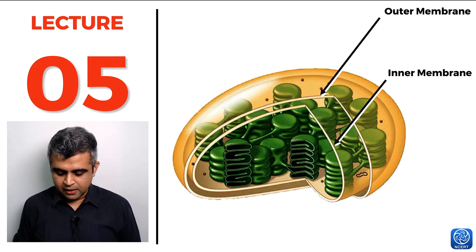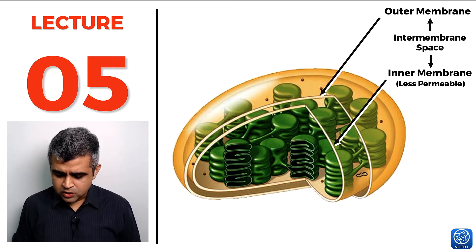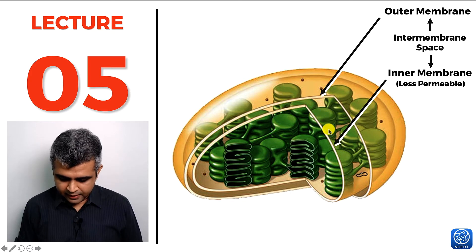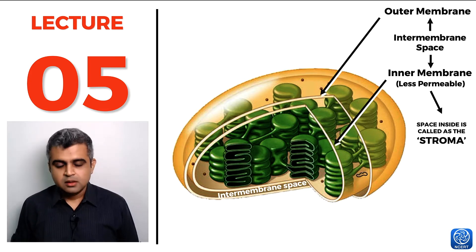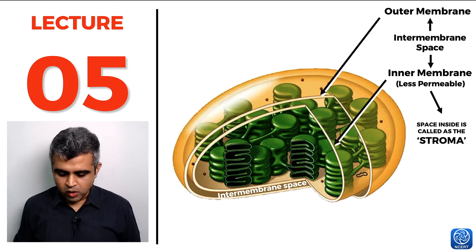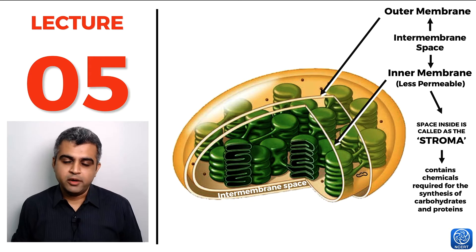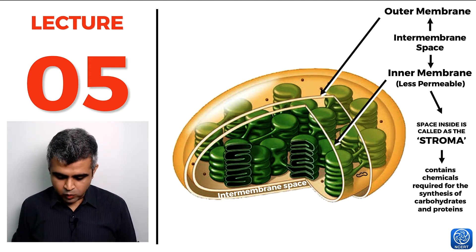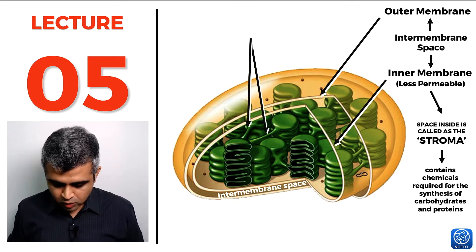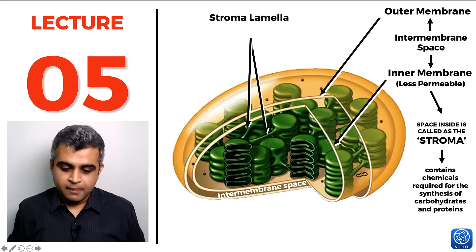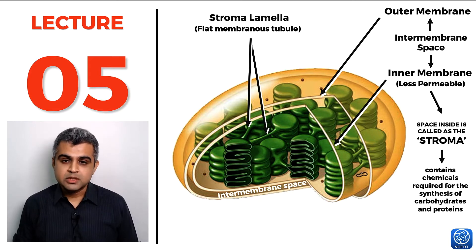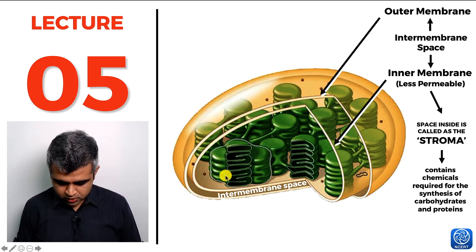The inter-membrane space in the chloroplast is less permeable. Whatever is present inside the inner membrane is called the stroma, which contains the chemicals required for carbohydrate production and photosynthesis — so photosynthesis reactions take place within the stroma. Inside the stroma there are flat membranous tubules connecting the internal structures, called stroma lamellae.